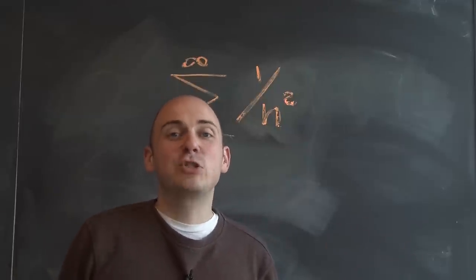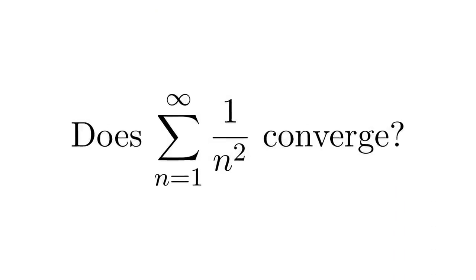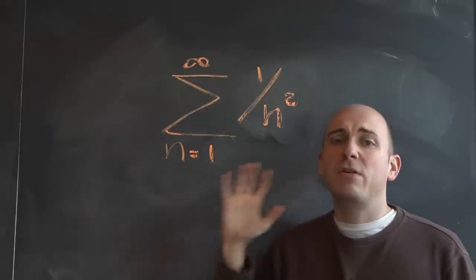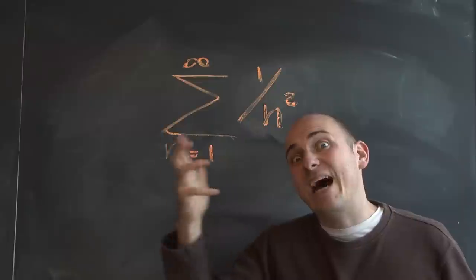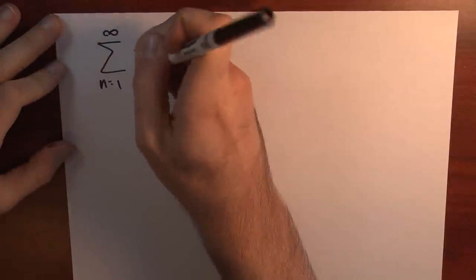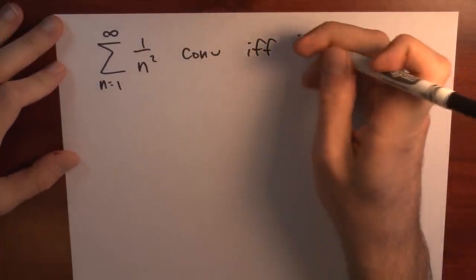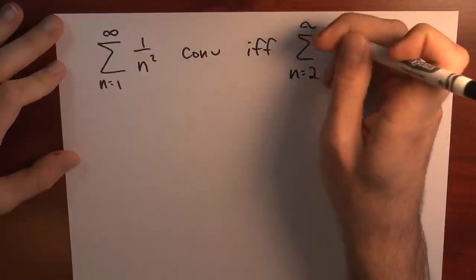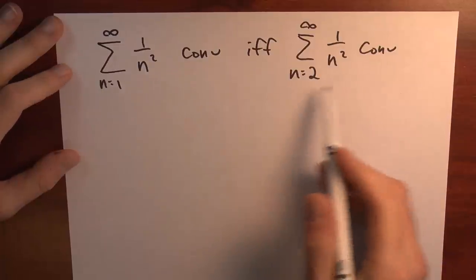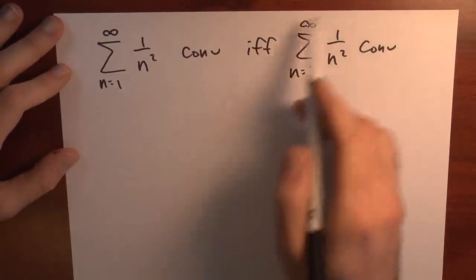Let's sum the reciprocals of squares. There are a few different approaches to trying to determine whether or not this series converges or diverges. Here's the series I'm interested in: the sum n goes from 1 to infinity of 1 over n squared. That series converges if and only if the series with n starting at 2 to infinity of 1 over n squared converges — whether or not I include the n equals 1 term doesn't affect convergence. So let's analyze this series.